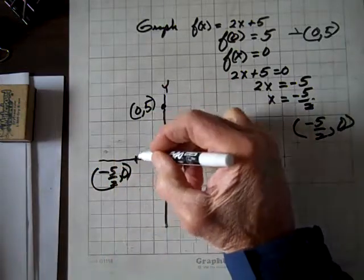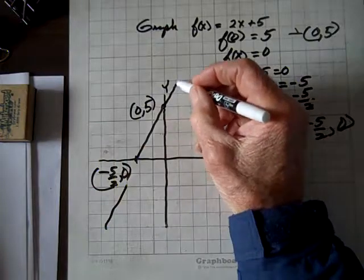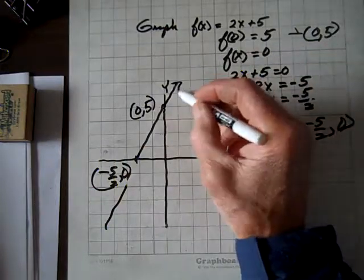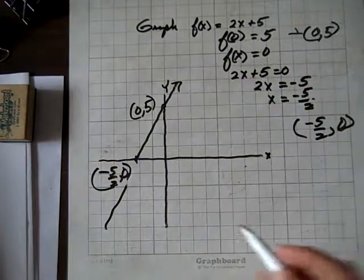And now we'll draw a line through these two points. And there we have the graph of f(x) = 2x + 5.